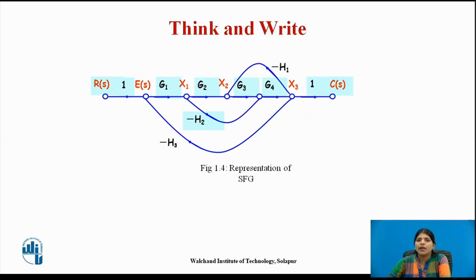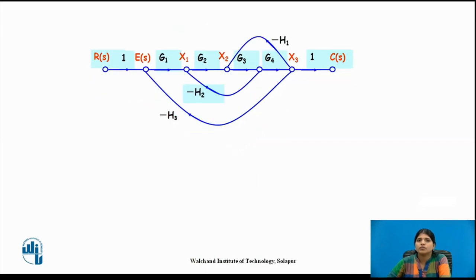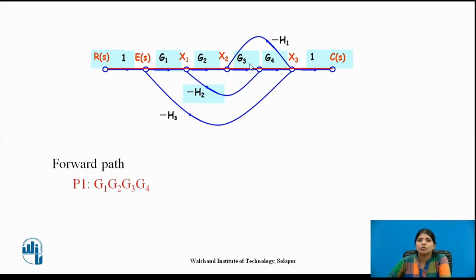Pause the video for a minute and recall the terminologies used in signal flow graph. For this example, identify the forward paths and loops, and write down the loop gains. There is only one forward path, P1, equal to G1·G2·G3·G4.